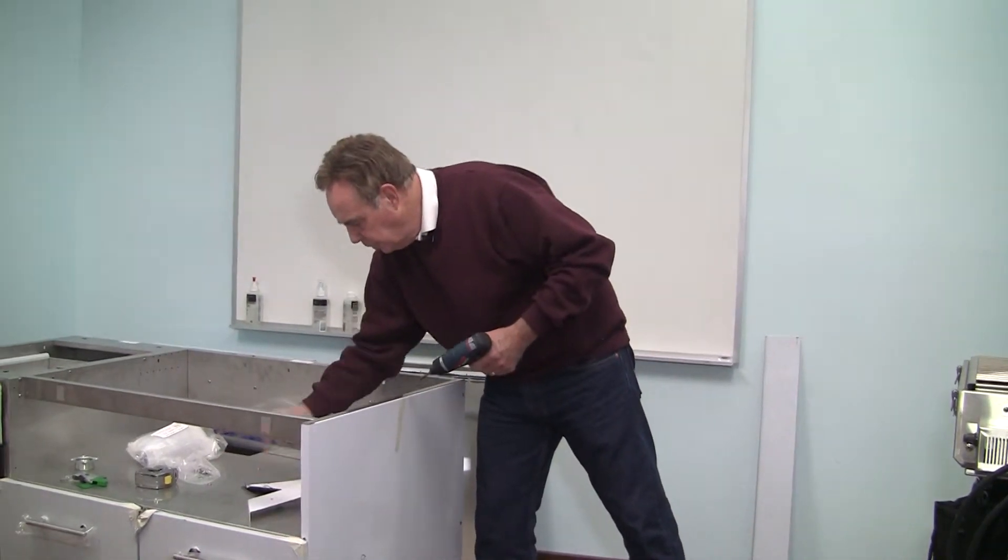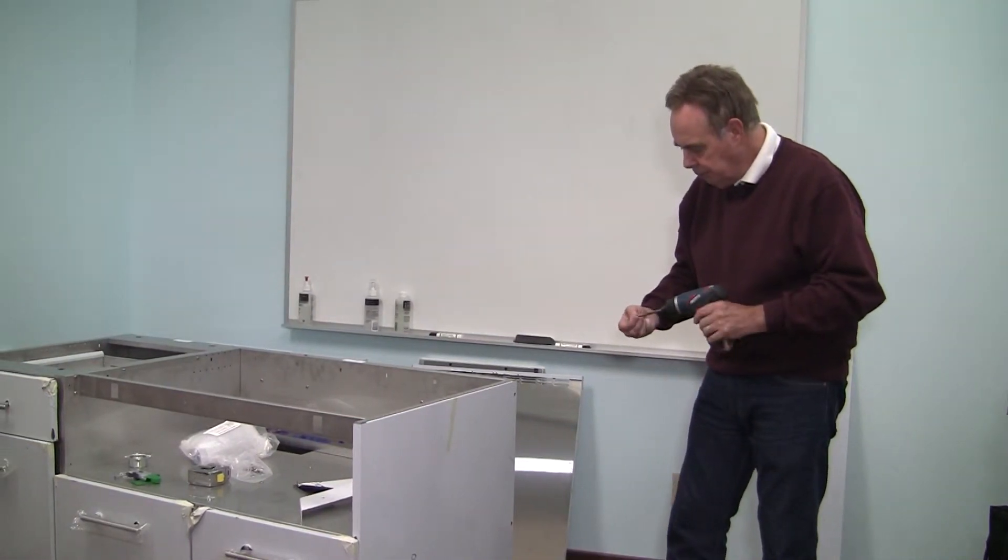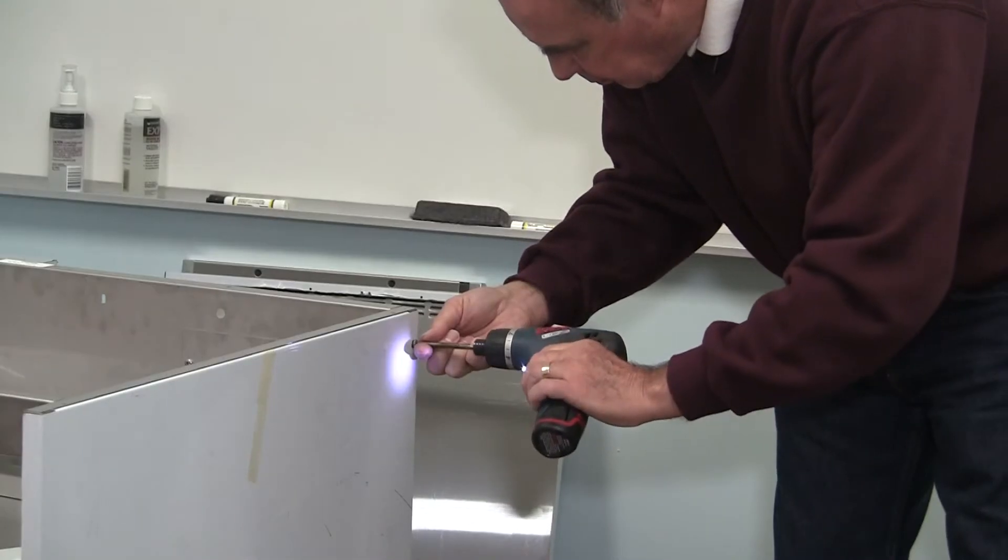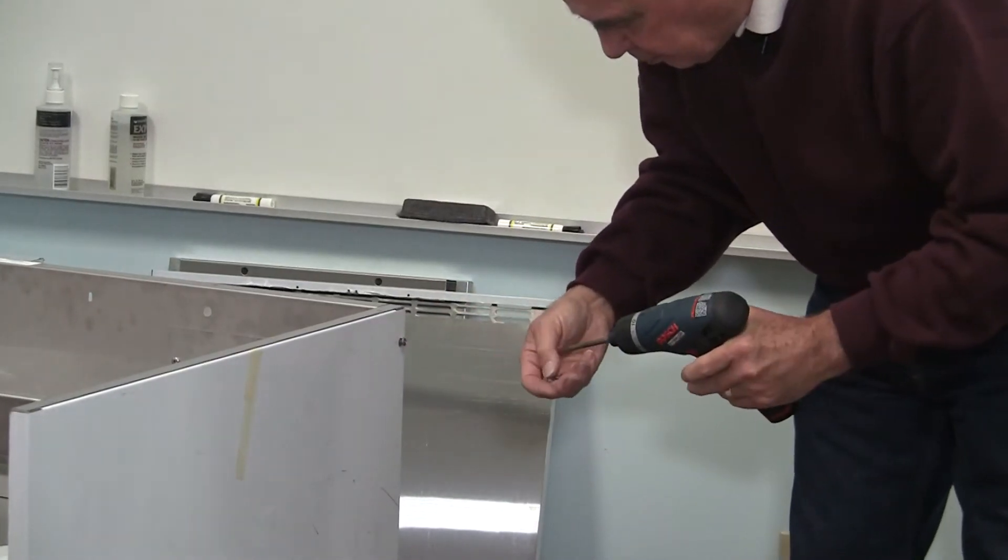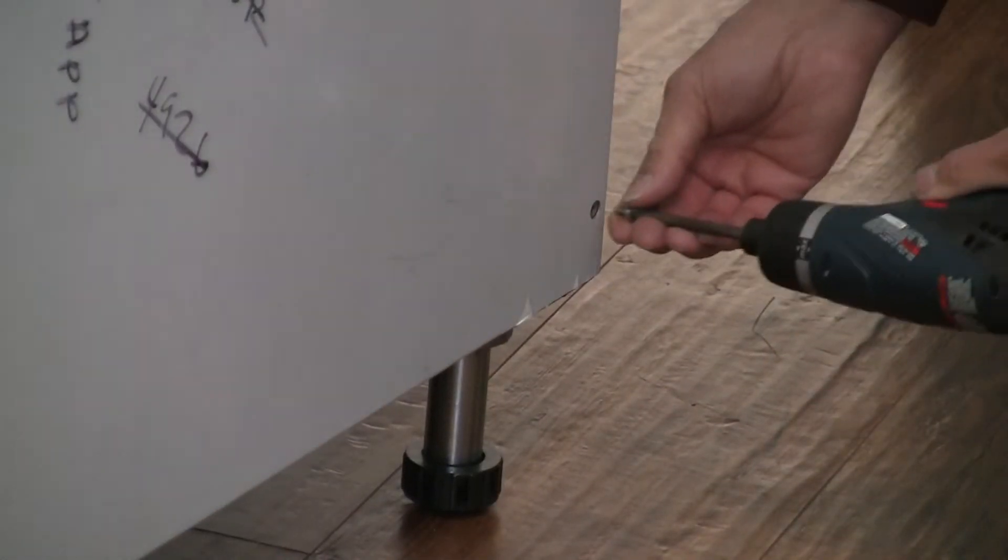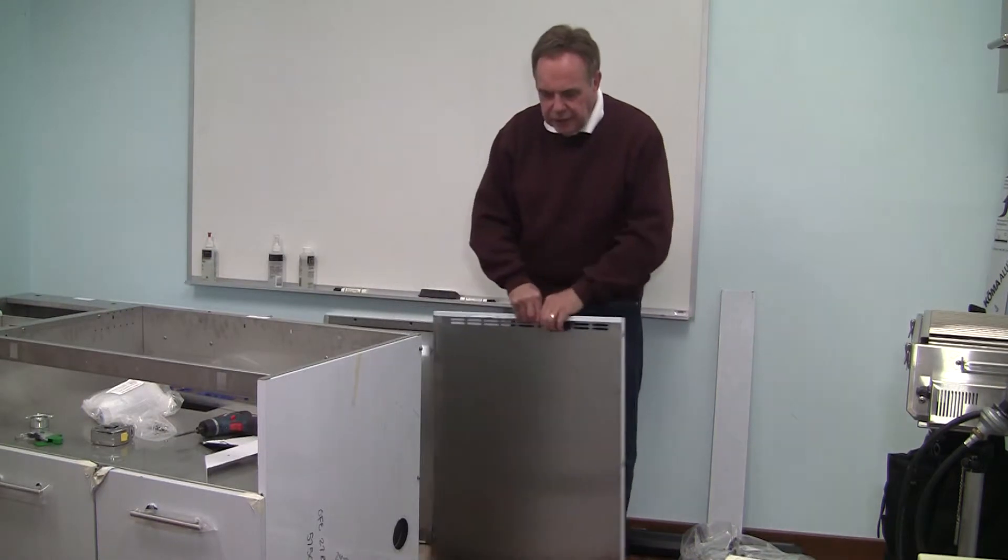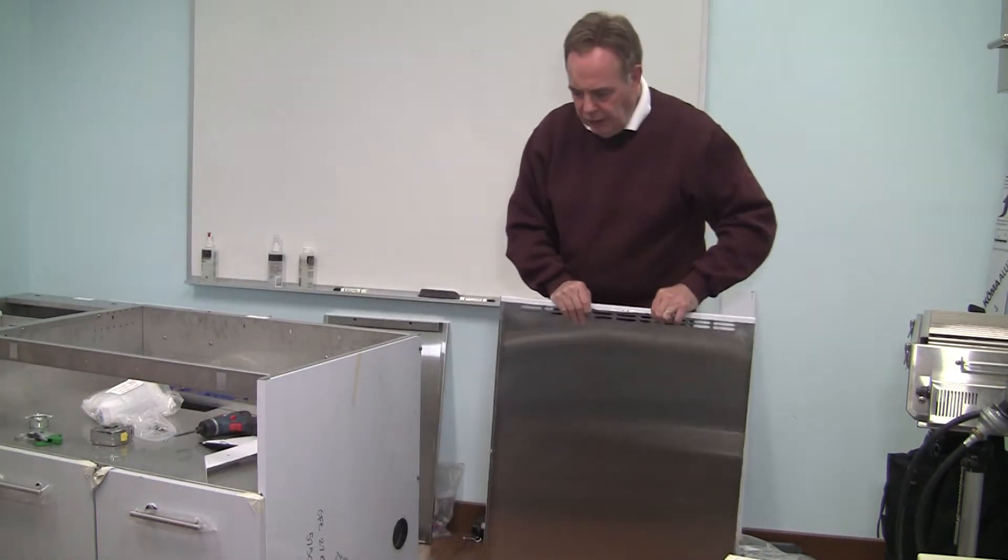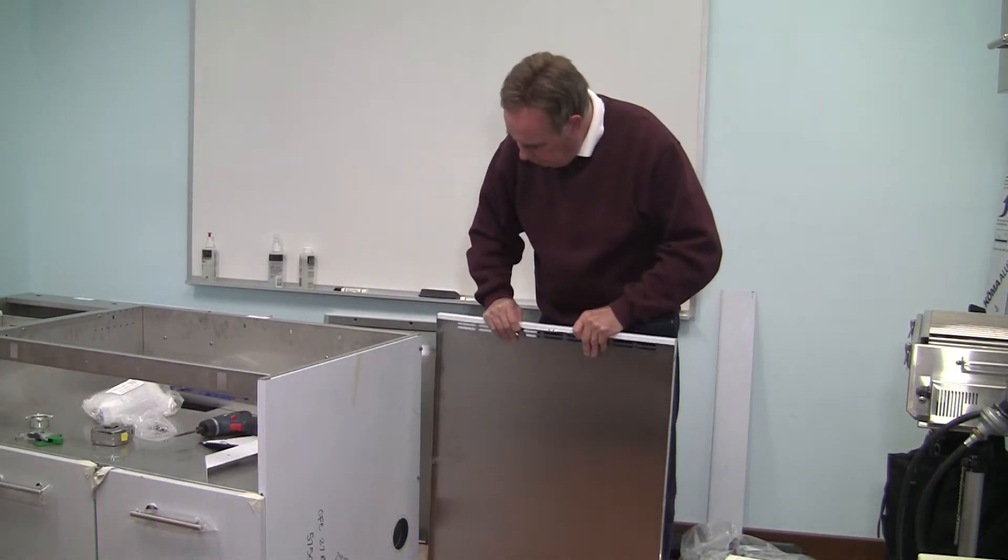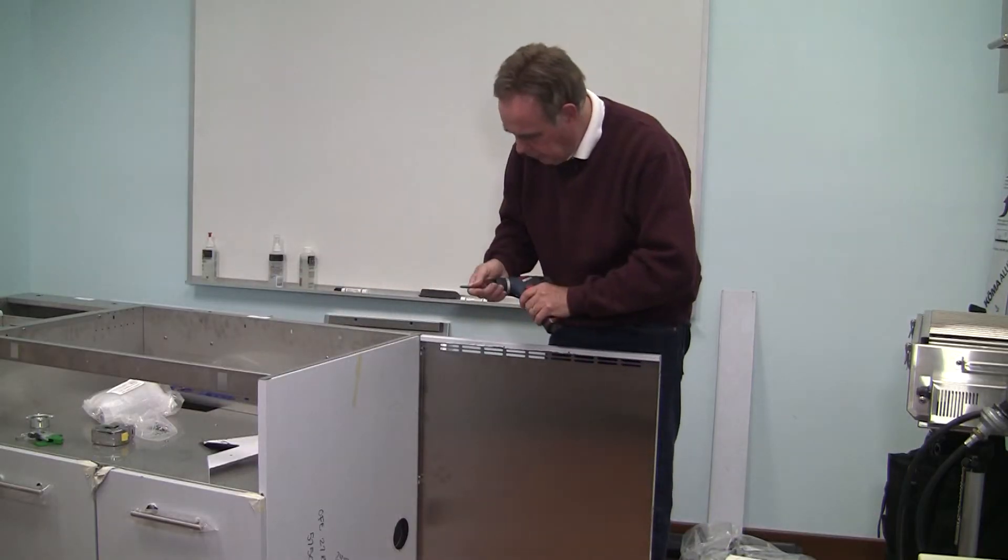We are going to start three screws. Take your refrigerator spacer and hang it onto the three screws and tighten them into place.